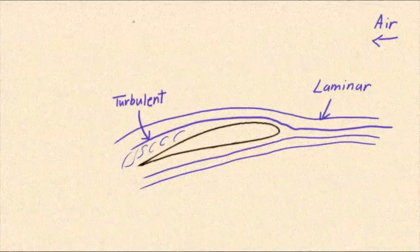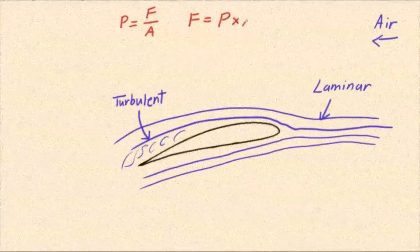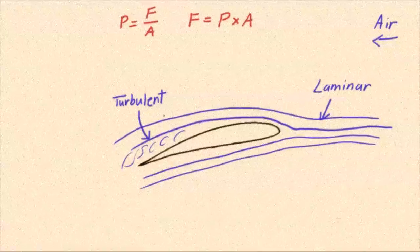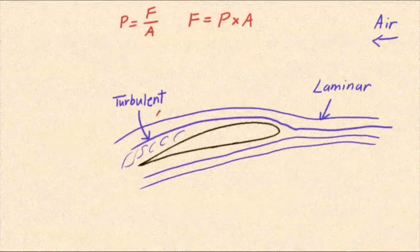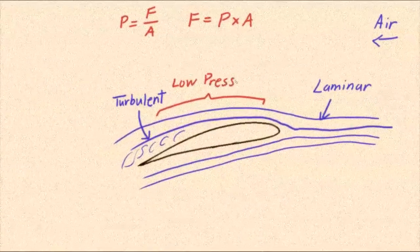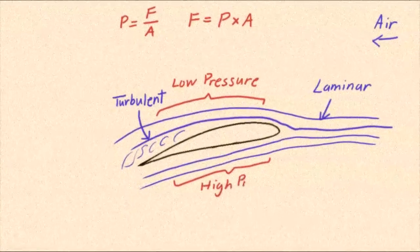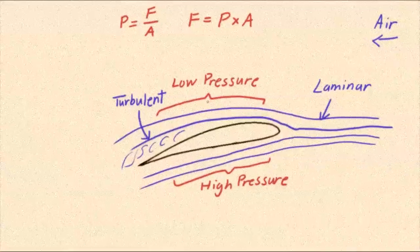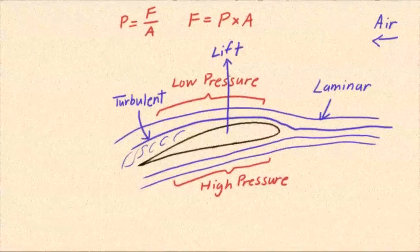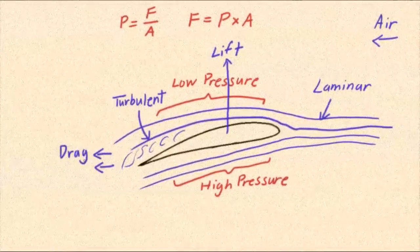Pressure is defined as force divided by area. However, since we are most concerned about the forces of lift and drag, it is easier to write the equation as force equals pressure times area. Pressure differences between two surfaces of an object create a force going from high to low pressure because the pressures want to equalize. The air travels faster above the wing creating an area of low pressure. Conversely, slower air on the bottom of the wing creates a high pressure area. The airflow above the airfoil separates toward the back and creates turbulence impacting lift and drag. The high pressure area below the wing and low pressure area above it creates a force called lift. The high pressure area at the front of the wing and low pressure area at the back creates a force called drag.